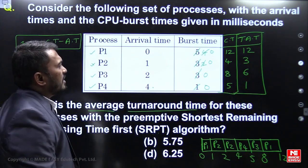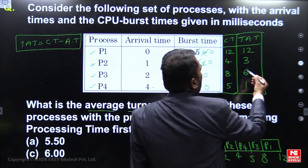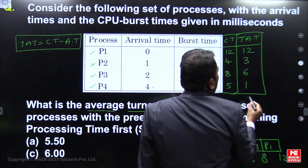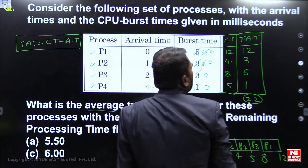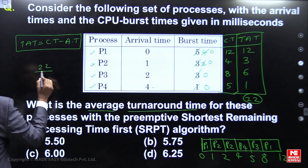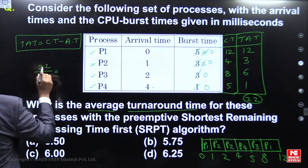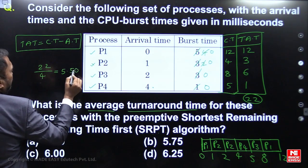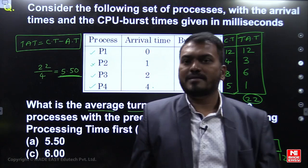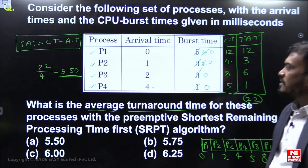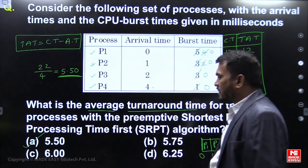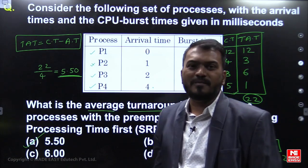Adding the turnaround times: 12 + 3 + 6 + 1 = 22. The average turnaround time is 22 divided by 4, which equals 5.50. So the right answer is A. This is how you solve this type of problem.